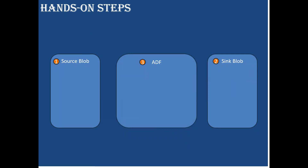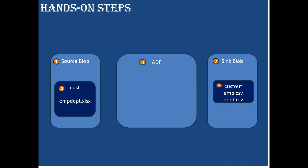In the hands-on lab I'll be creating three resources: source blob, sink blob, and ADF. In the source blob, I'll create a source container called 'cust' and upload the emp_department.xlsx Excel file, which has the Employee and Department sheets. For each sheet I'll create one CSV file, converting them into emp.csv and department.csv.